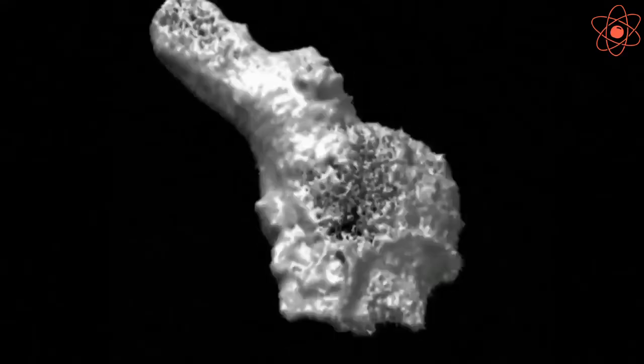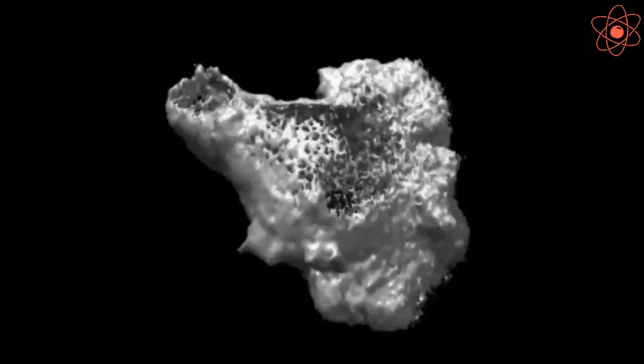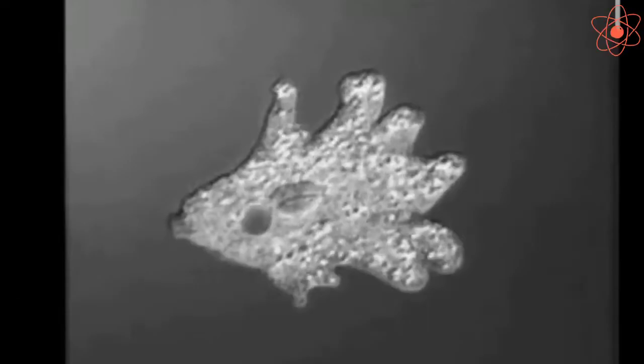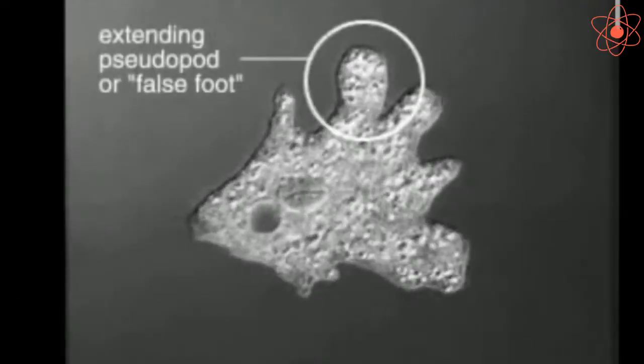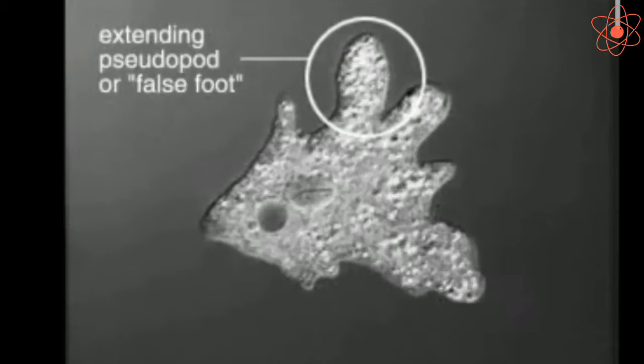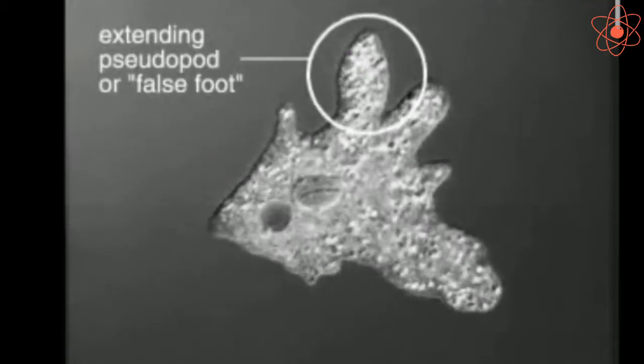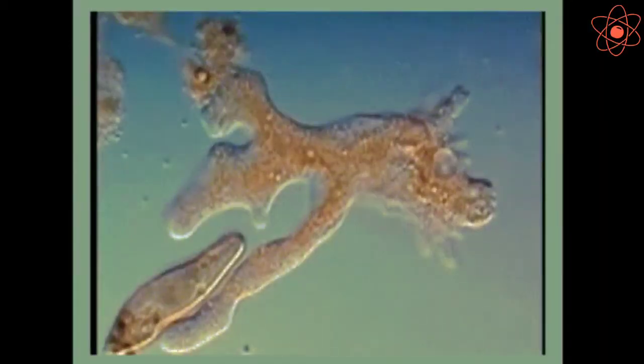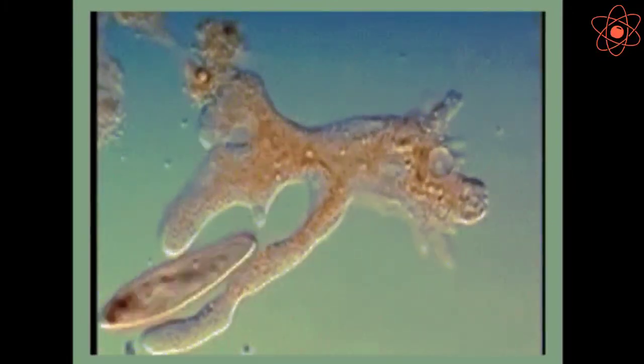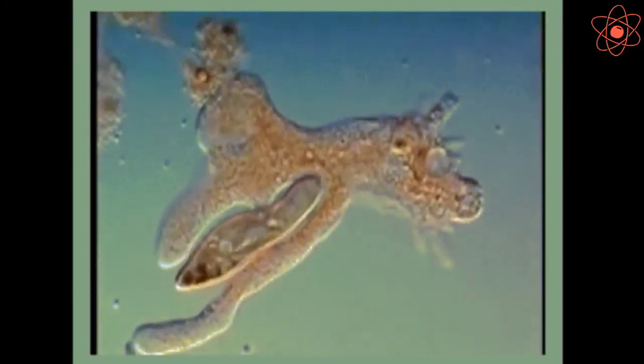However, certain cells can change their shape. For example, amoeba has no definite shape. It keeps on changing its shape by giving out projections known as pseudopodia that are used for locomotion, feeding, capturing and other activities.